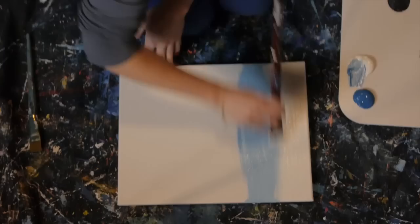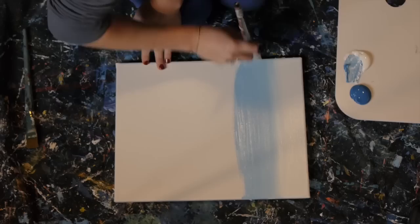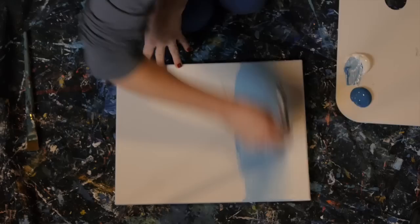Start to work this lighter color into the white section and just keep painting back and forth. It's going to blend the two colors in really nicely for you.